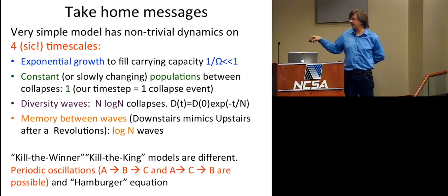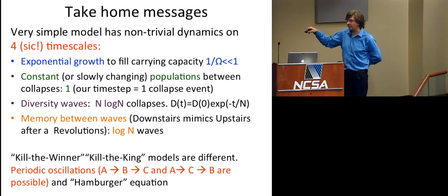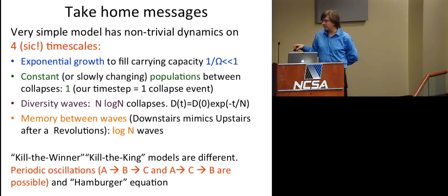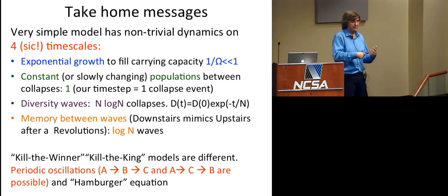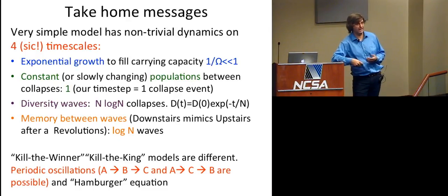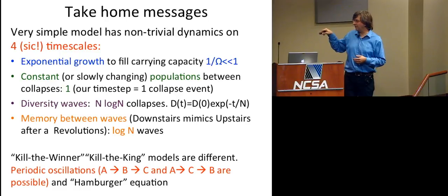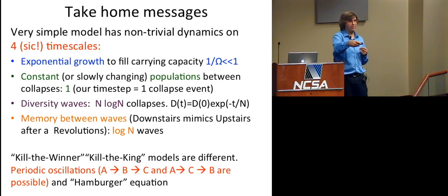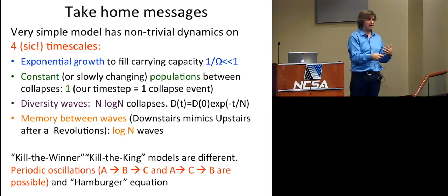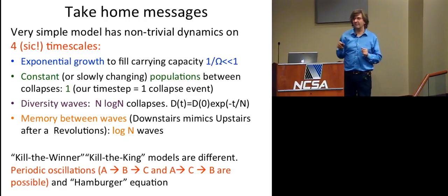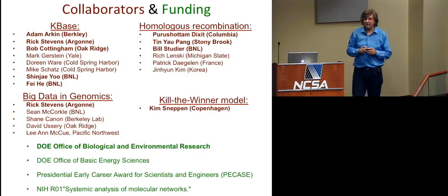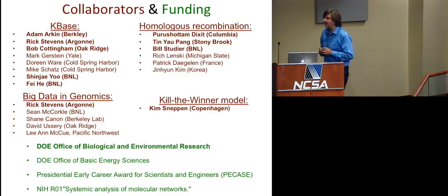And finally, kill the winner or kill the king models are different from this dynamics, and they have those periodic oscillations, which are interesting because you see quite often the periodic oscillations in ecosystem dynamics. But what is special about those oscillations is that the order in which populations oscillate can be anything. It's a frozen accident of their sizes early on in the dynamics of the system.